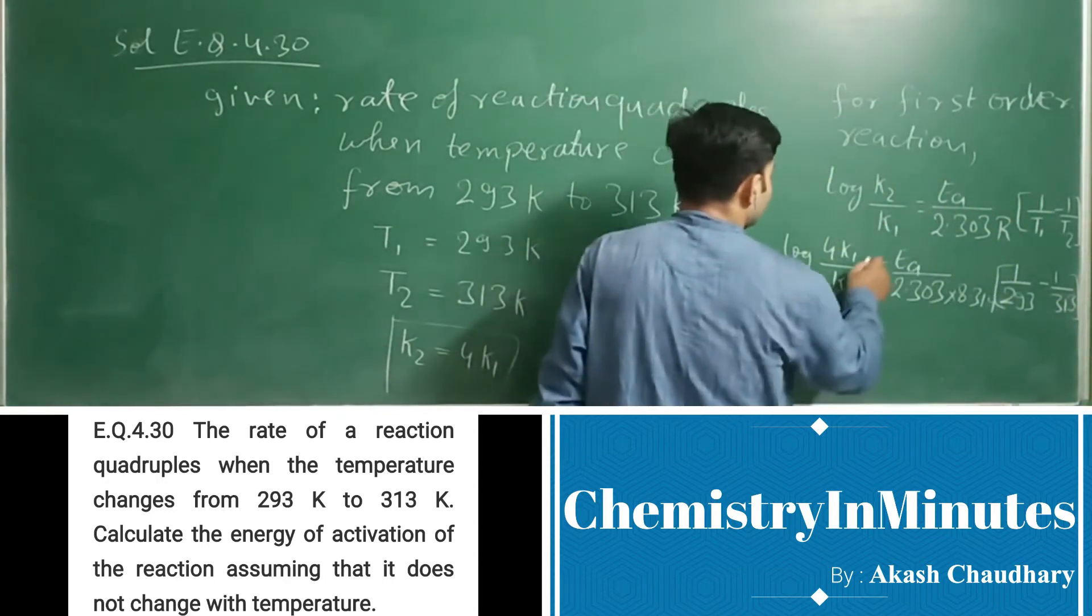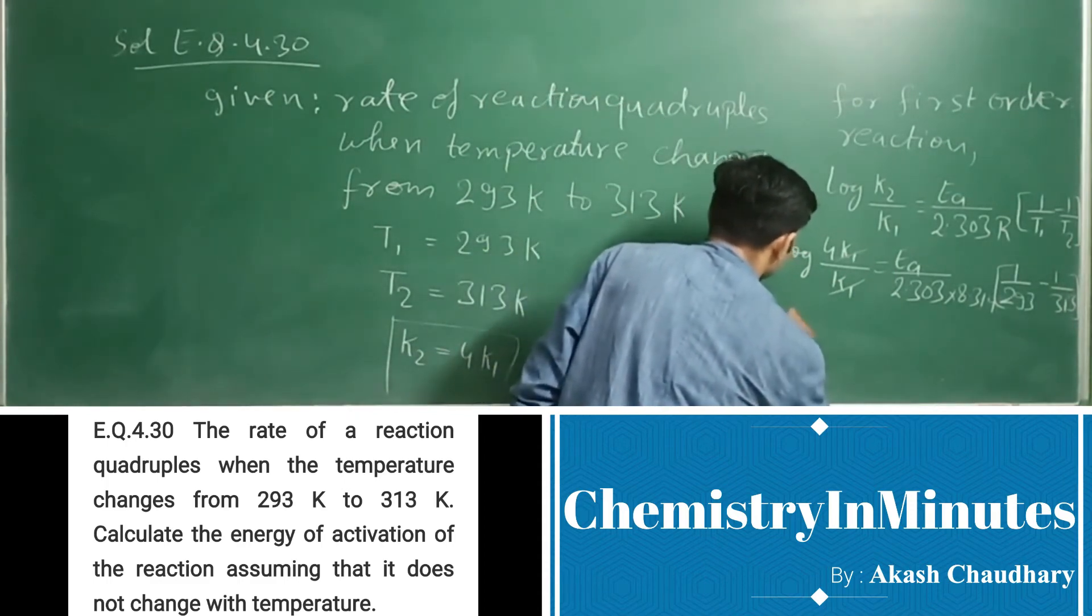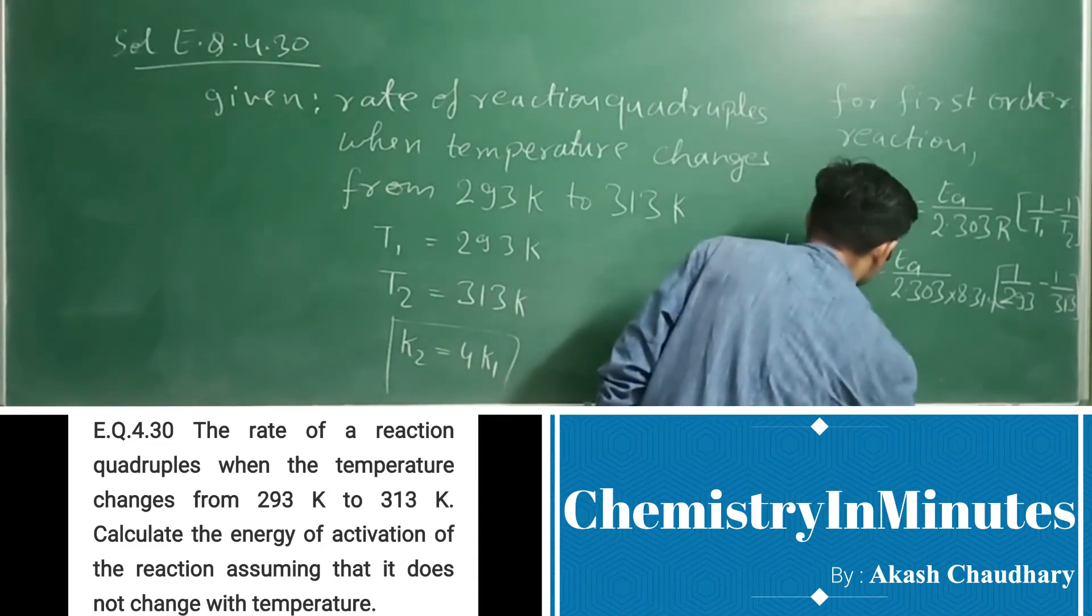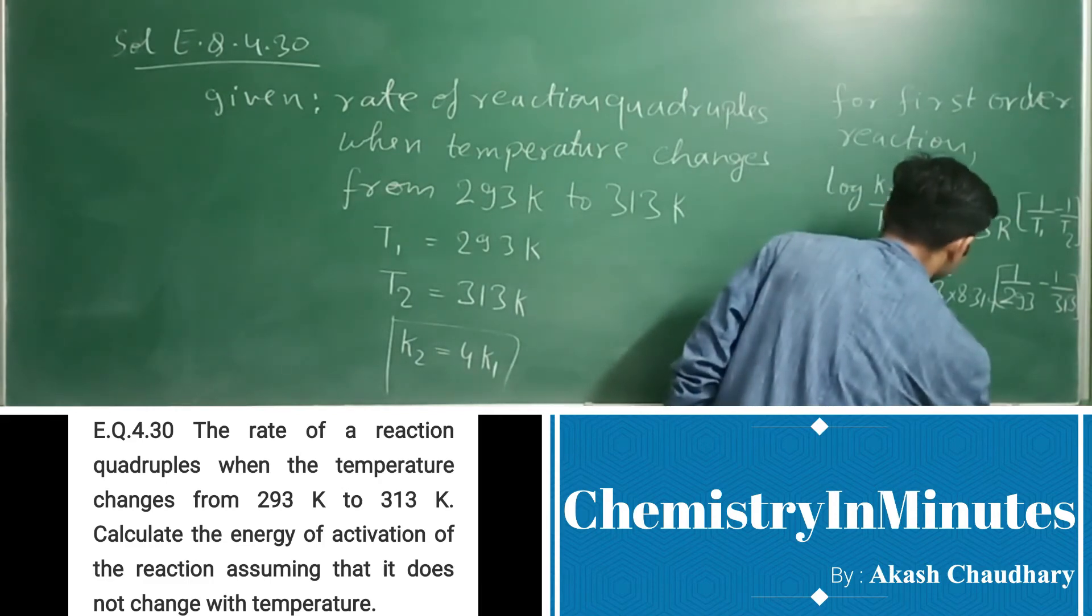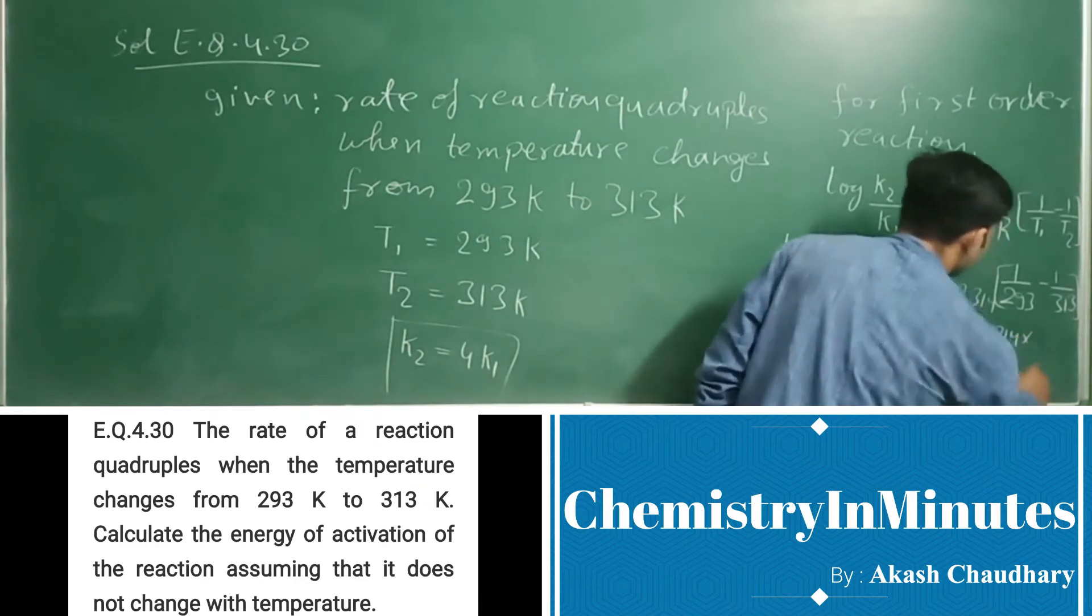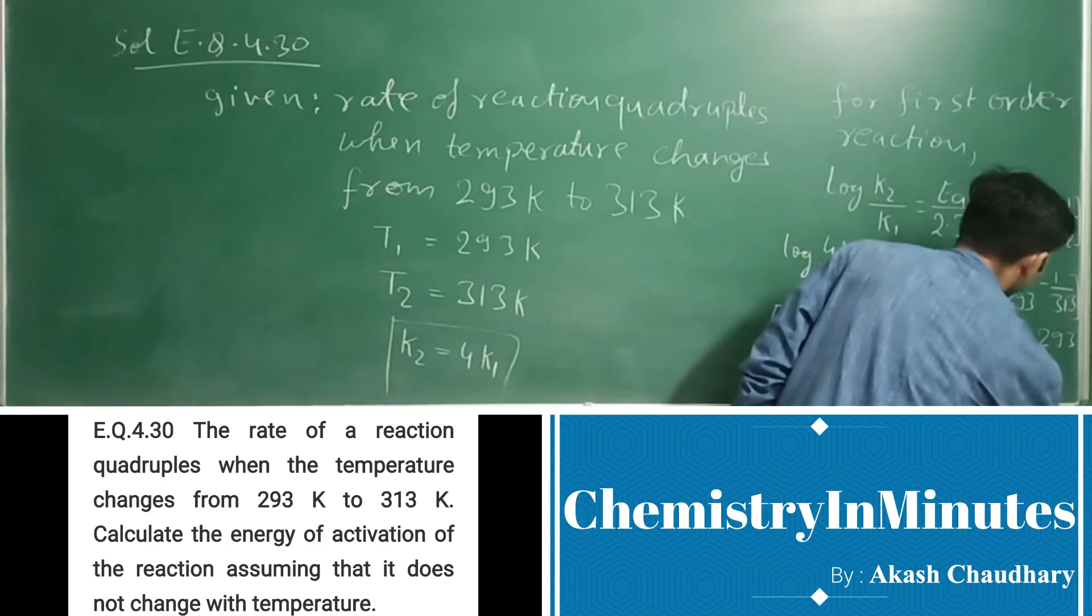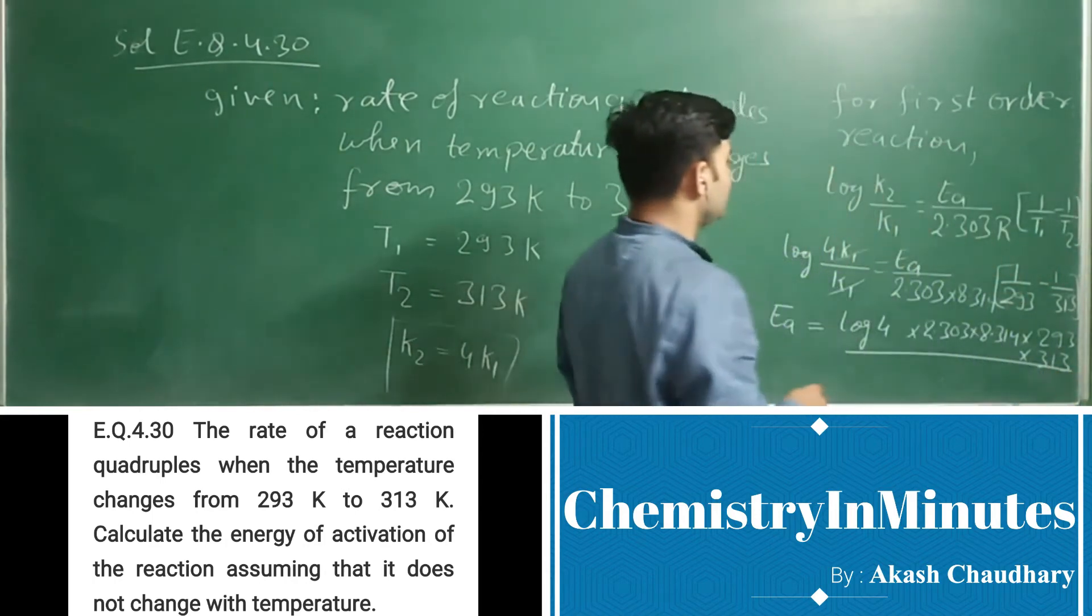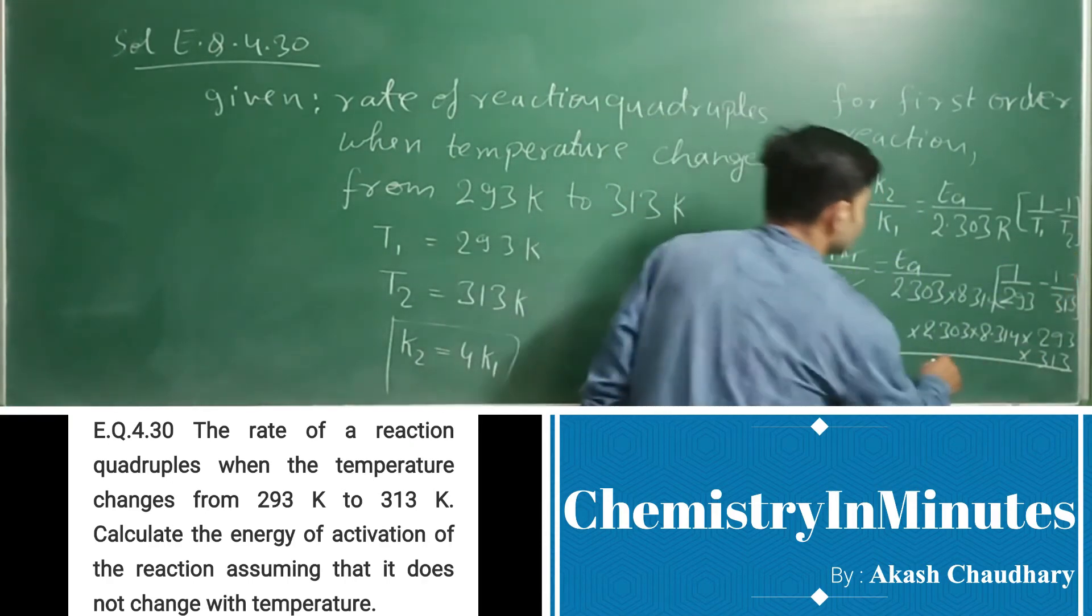Now this K1 and K1 will be cancelled. So Ea will be getting log 4 into 2.303 into 8.314 into 293 into 313, this whole will be divided by 313 minus 293 that is 20.